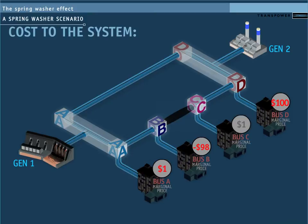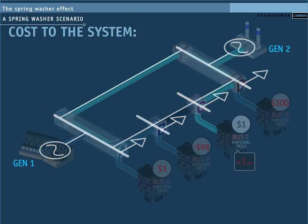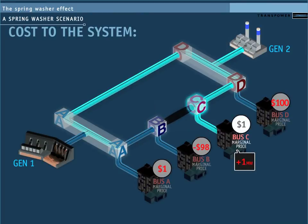Now let's calculate the marginal price for bus C. For SPD, this is the same calculation as it used to calculate the marginal price for bus B, just flipped. To send the next megawatt of load to bus C, generator 2 would have to supply 2 megawatts,